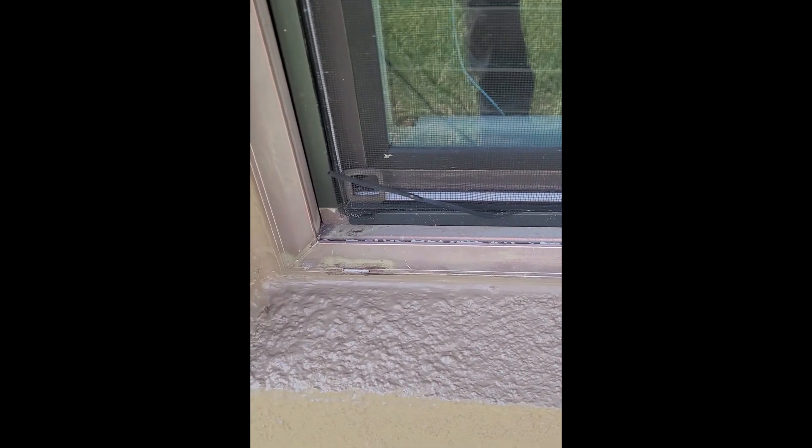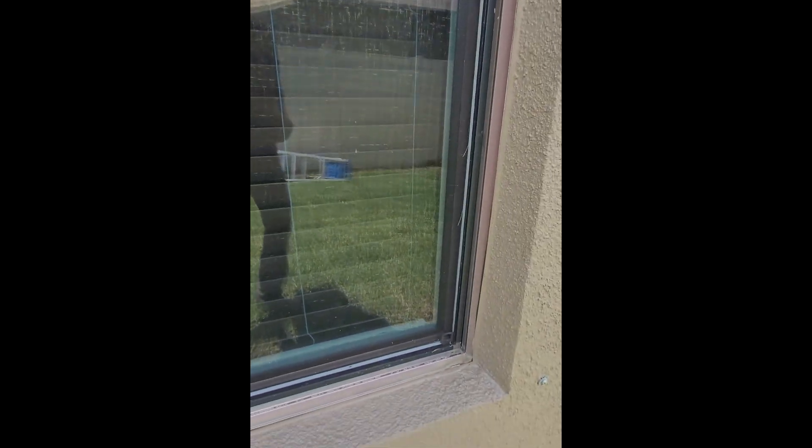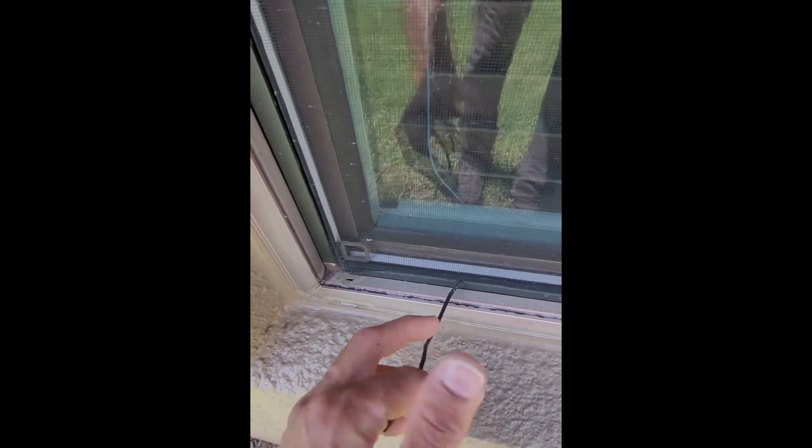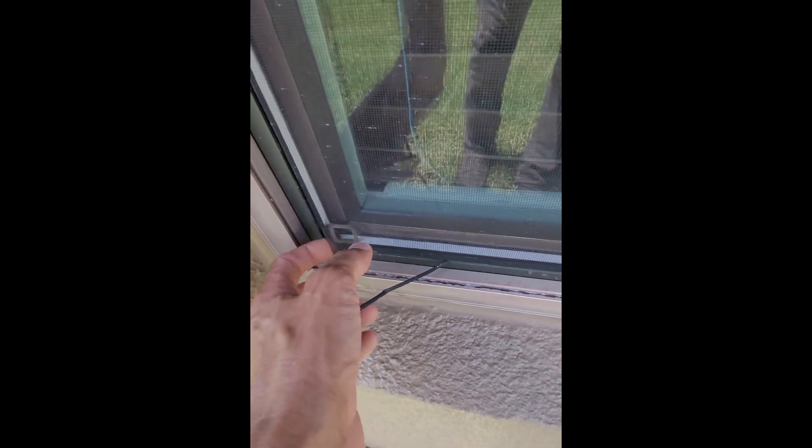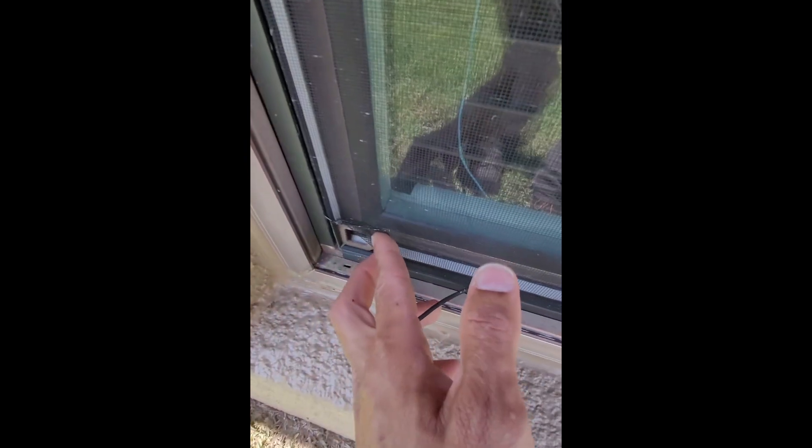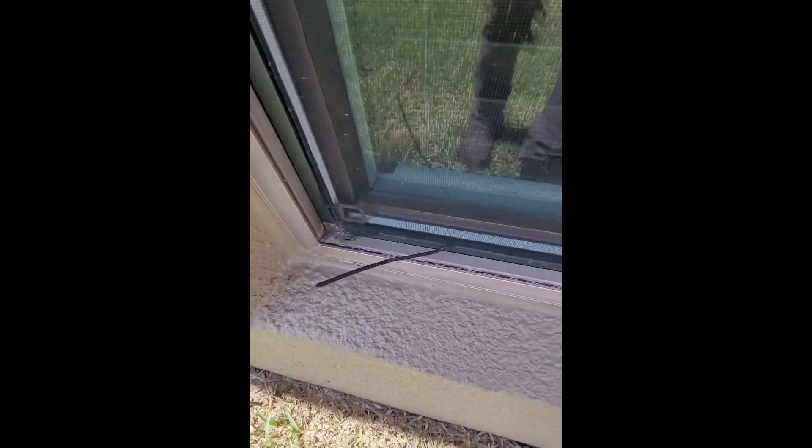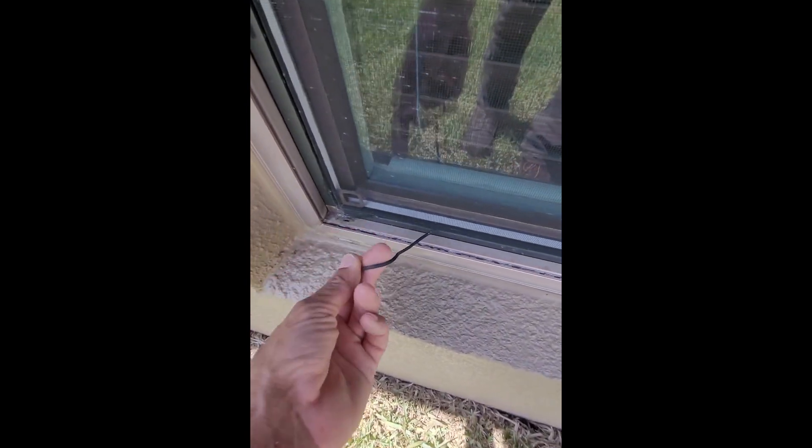Typically you're going to get an inspection when you go to sell your home, and there's a lot of things that come up that the inspectors are going to find. So they're trying to beat the inspector to the punch and get things like this fixed. Here's a screen that's coming undone. You can see the spline has come out. That's one. We've got another one over here that has a rip in it.